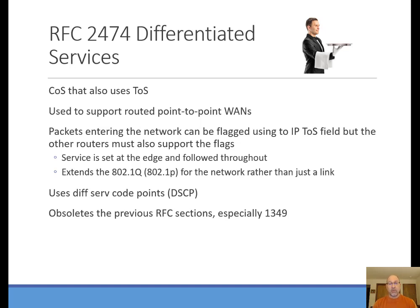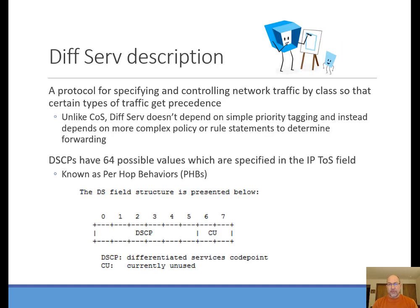A long time ago, that 802.1Q priority field was actually called 802.1P. The differentiated services RFC obsoletes all the stuff that went on before. Differentiated services is a protocol for specifying and controlling network traffic by class — certain types of traffic get precedence, and you can also mark traffic as very low priority. There are 64 possible DSCP values. In that one-byte field, we describe the differentiated services code point values that go in six of the eight bits, and the CU field — currently unused at the time RFC 2474 was written — covers the remaining two bits.